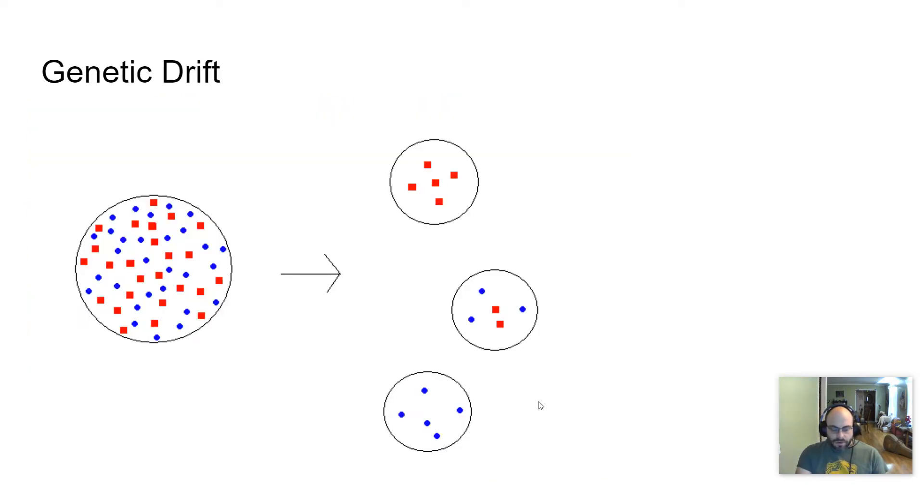One of those is called genetic drift. Genetic drift is a random change in a particular population. Typically, a smaller population is going to be more affected by genetic drift based on the nature of genetic drift. It's a non-selective process.